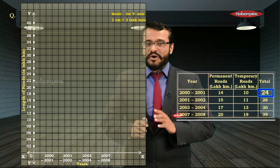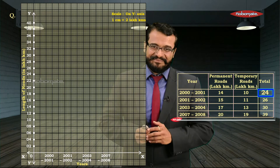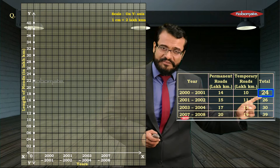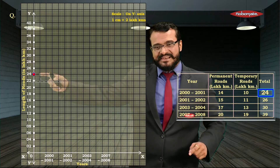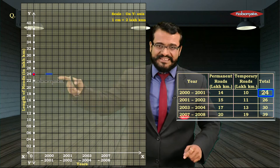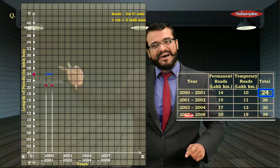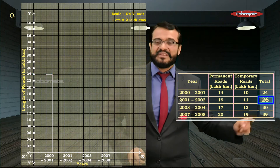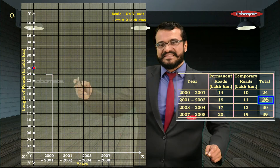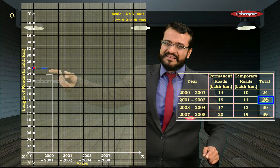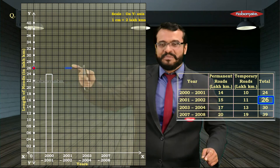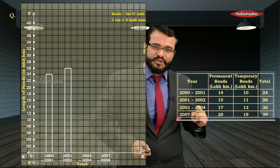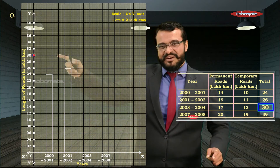Your graph paper is now fully ready. For the first year 2000–2001, the total is 24, which is on the y-axis, so mark the top at 24 and draw a bar. For the second year the total is 26 — mark and draw the bar. For the third year the total is 30 — mark 30 on the y-axis and draw the bar.